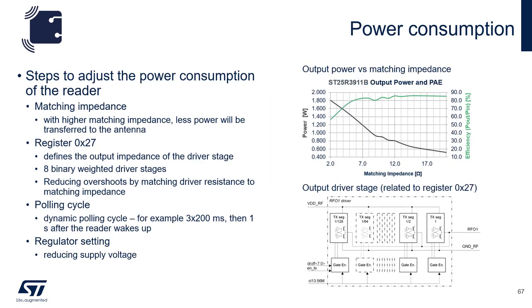There are several ways to reduce power consumption on the 3911B. The first and foremost is the matching impedance — matching at higher impedance will reduce the power consumption of the device. You can also use Register 27, which defines the output impedance of the driver stage. These are eight binary-weighted drivers that can be adjusted via register settings, though most of the time this is used to reduce overshoots. You can also do a dynamic polling cycle to reduce the number of times the reader polls, reducing power consumption. Finally, you can adjust the regulator setting to reduce power. Be careful, though — Register 27 and adjusting the regulator settings can increase power consumption in the device, which means the device may get hot.